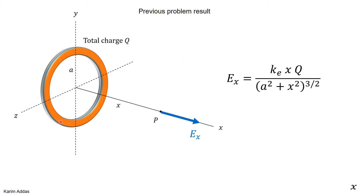In the previous problem we had a ring of radius a — the ring is empty inside with charge only on the perimeter. The radius of the ring was a, and we got an expression for the electric field where a is the radius and big Q is the total charge of the ring. We already proved that the electric field is only in the x direction, so clearly for the disk also the electric field is only going to be in the x direction.